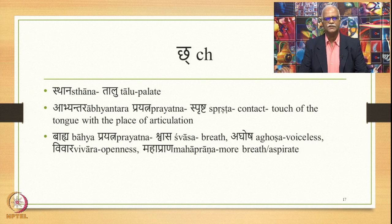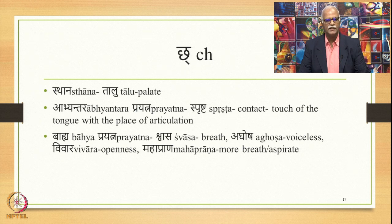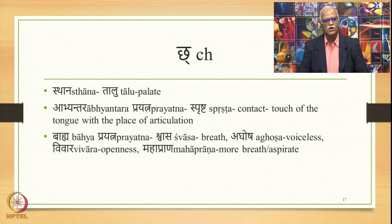The next sound is chha. The place of articulation of this sound is talu. Abhyantara prayatna is sprashta — contact or touch of the tongue with the place of articulation. The bahya prayatna is shvasa (breath), aghosha (voiceless), and vivara (openness), with mahaprana as the feature. It requires more breath and is called an aspirate sound. Compare ch with chha.